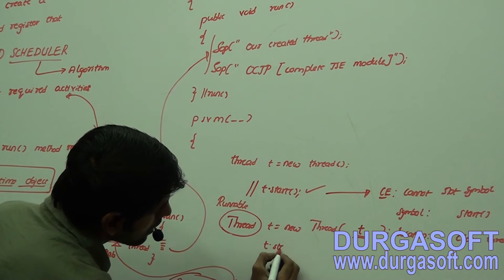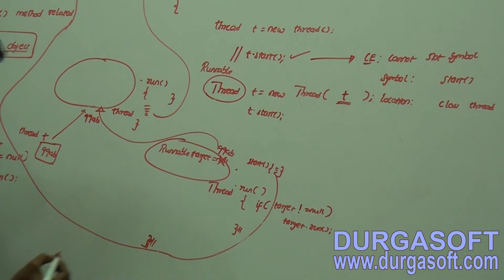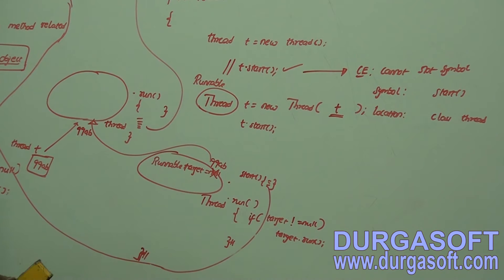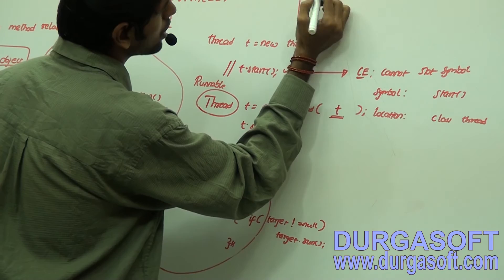Now the run method checks: if target is not null, they call target.run() - that is very important. Now we call t1.start() and end the main method. A child thread is going to start. It internally calls the run method related to the underlying runtime object. Let me take two stacks for the main thread and child thread to explain.